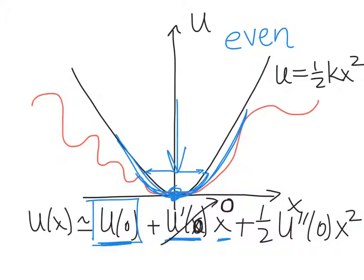And then finally, you're left with just this term over here, one-half, the second derivative of the potential energy function evaluated at x equals zero, times x squared.